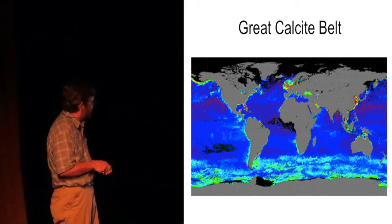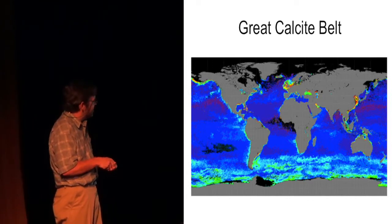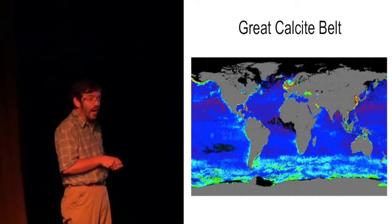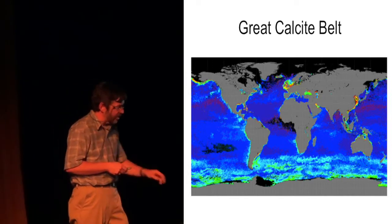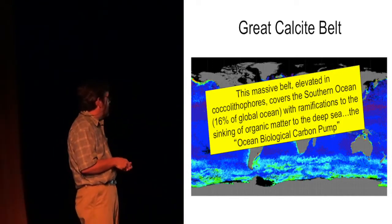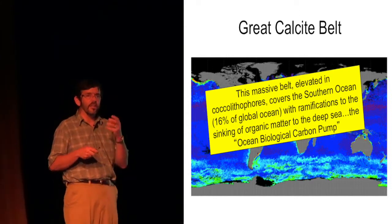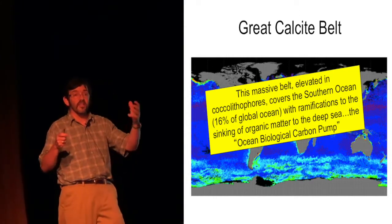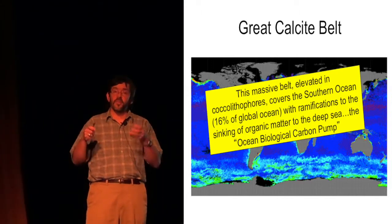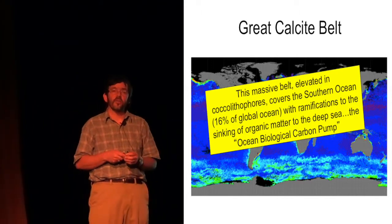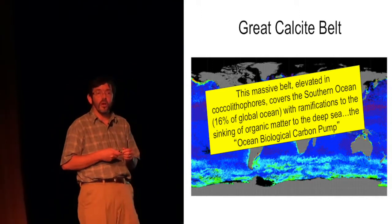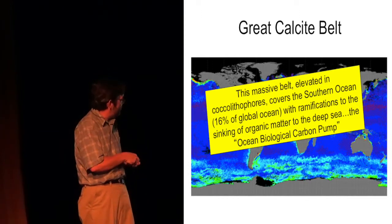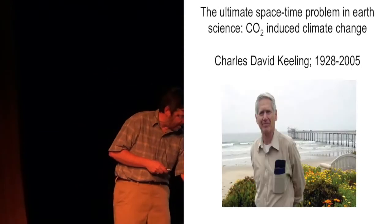The Great Calcite Belt, this region down here, covers 16% of the global ocean, as I alluded to earlier. And this is from coccoliths. And we've done several cruises down here in the Atlantic and the Indian sectors showing that it's coccoliths. And the ramifications of this material is enormous. Because calcium carbonate is limestone. It's very dense. And this stuff can fuel the sinking of particulate matter down to the bottom of the sea. And it fuels what is essentially the ocean biological carbon pump. So this feature down here has huge biogeochemical importance.